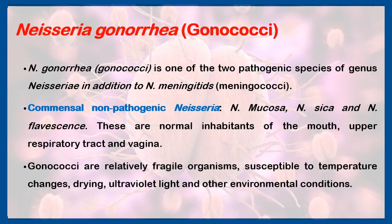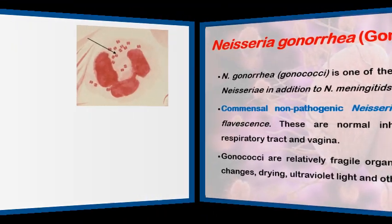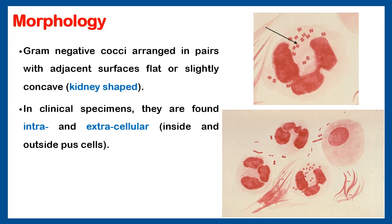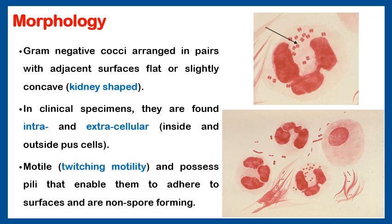Under the microscope we can see gonococci as gram-negative cocci arranged in pairs, with adjacent surfaces flat or slightly concave, giving a kidney-shaped appearance. In clinical specimens — of course in pus — we will find this organism inside and outside pus cells. They are motile with twitching motility and possess pili that enable them to adhere to the surface. They are non-spore forming.